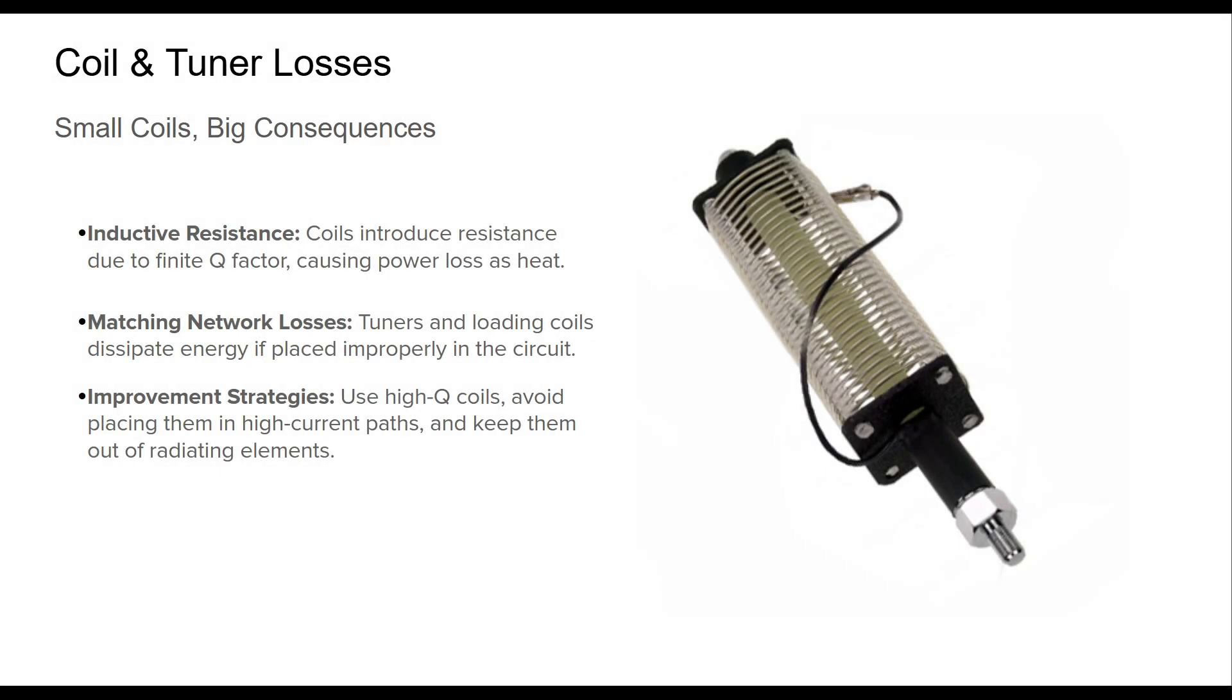Loading coils and matching networks are essential for bringing antennas into resonance, especially electrically short ones. However, they also introduce resistive losses. Every real coil has a Q factor, which represents the ratio of stored-to-lost energy. A low-Q coil bleeds power as heat. For instance, a 5-microhenry coil with a Q of 100 at 7 MHz adds about 0.3 ohms of resistance. While this seems minor, it can significantly affect systems where radiation resistance is already low. These losses are especially critical when coils are placed in radiation paths. The smart move? Use high-Q inductors and ensure construction minimizes parasitic resistance. These practices ensure minimal tuning losses and maximum radiated power.